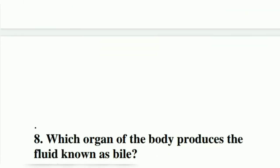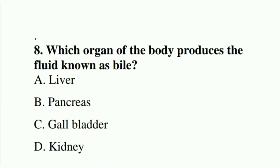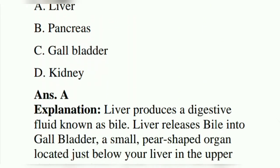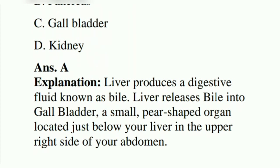Eighth question: which organ of the body produces the fluid known as bile? Option A: liver. Option B: pancreas. Option C: gallbladder. Option D: kidney. The answer is A, liver. The liver produces a digestive fluid known as bile and releases it into the gallbladder, a small pear-shaped organ located just below the liver in the upper right side of the abdomen.